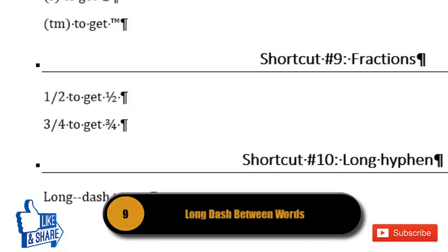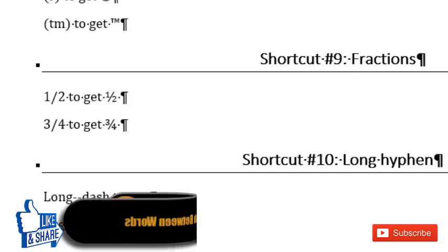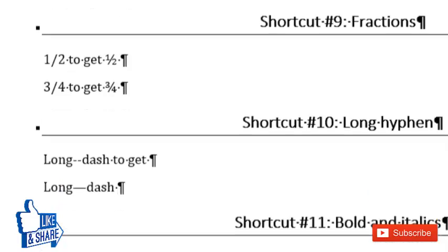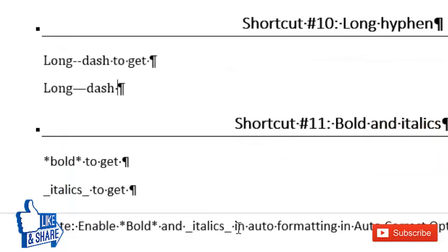To get a long dash, type double hyphens between the two words you want to join and then press Space. After pressing Space, the double hyphen is automatically converted into a long em dash.